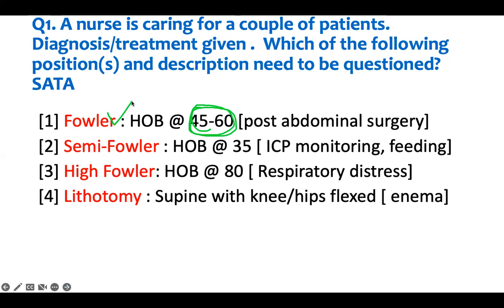Semi-Fowler position is very important - make sure you know it. The semi-Fowler position has the head of the bed at 30 degrees, not 35. You use it for brain monitoring of anybody who had brain surgery, ICP monitoring, or somebody who is feeding - you want blood to drain down to decrease ICP. It shouldn't go past 30 degrees. The way to remember: Fowler is 60, so semi-Fowler is 30. I use the 30, 60, 90 rule - Fowler is 60, semi-Fowler is 30, and high Fowler is 90. So the treatment is fine, but 35 degrees is wrong.